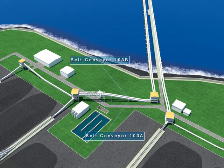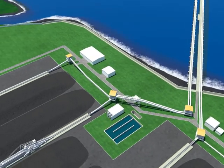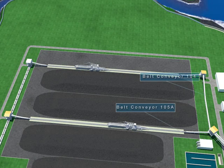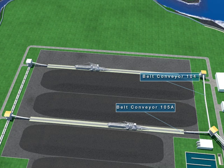The coal which goes through Transfer Tower 102 arrives at Transfer Tower 103 after sampling by going through Belt Conveyor 103A or 103B. It is then sent to Belt Conveyor 104 or 105A after being transferred through the Diverted Gate at Transfer Tower 103.